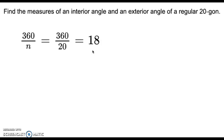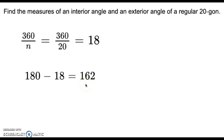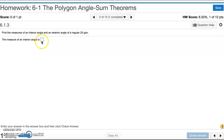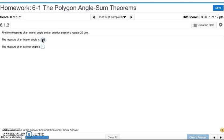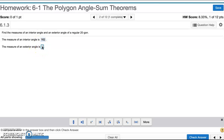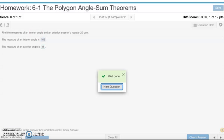Now to find an interior angle: an interior angle and one exterior angle are a linear pair, meaning they add up to 180. So subtract 18 from 180, and that gives you 162 for the interior angle. The measure of an interior angle is 162 and the measure of an exterior angle is 18.